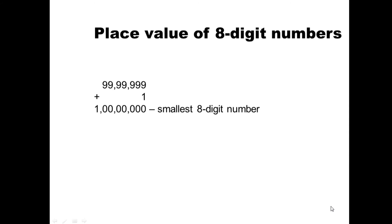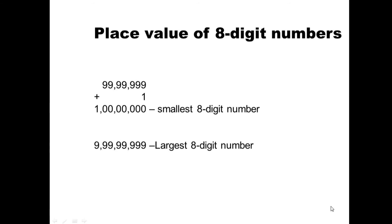Can you tell me what is the greatest 8-digit number? It is 9 crore 99,99,999 — that is 9,99,99,999 — which will be the largest 8-digit number. If you add 1 more, it will become a 9-digit number. So until 9,99,99,999, it is an 8-digit number, and it is also the largest 8-digit number.